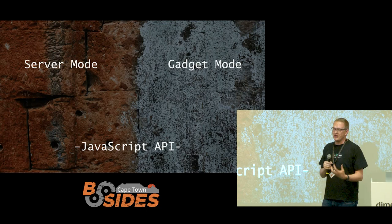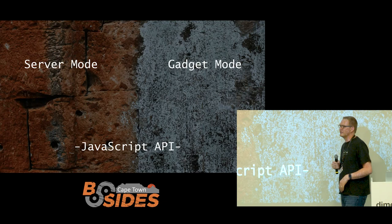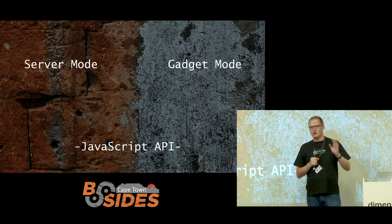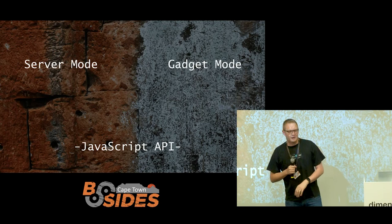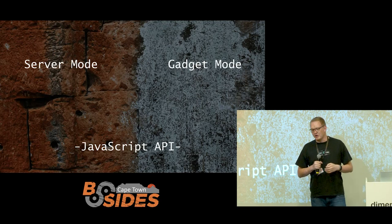Bad analogies aside, the first thing we need to understand is the operating mode Frida would be in. There are really two important operating modes: the first being server mode, and the second being gadget mode. Both modes expose a JavaScript API that you can use to interact with a mobile application at runtime. Server mode is applicable to rooted and jailbroken devices, but I'm making the claim that's probably not the most maintainable way to go forward.